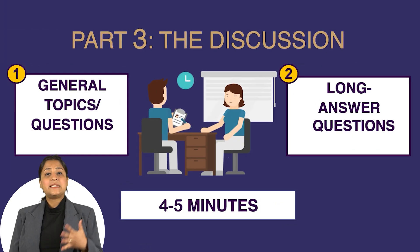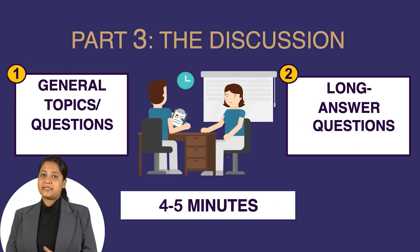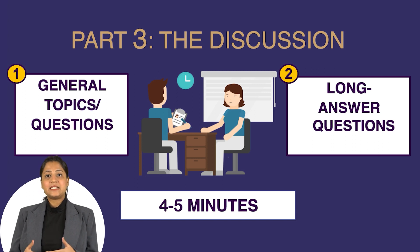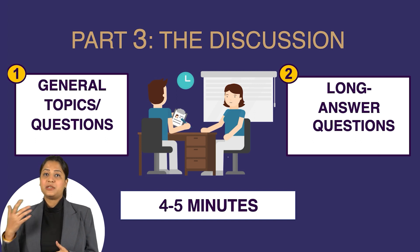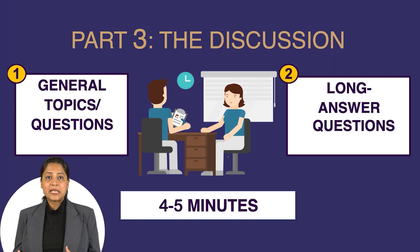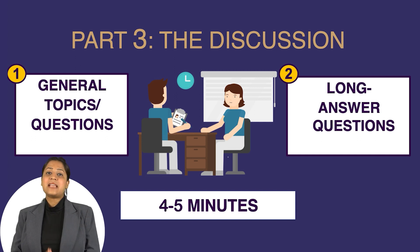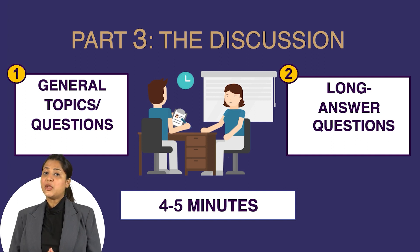Part 3 is the final part of the IELTS speaking test, also called the discussion round. The topic in Part 3 is connected to the one in Part 2. Here, you need to state your opinion, compare, predict, talk about the past, make speculations, and discuss habits of people in general. Part 3 goes on for 4–5 minutes, marking the end of the speaking test.